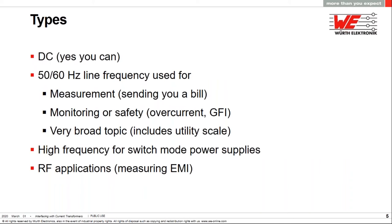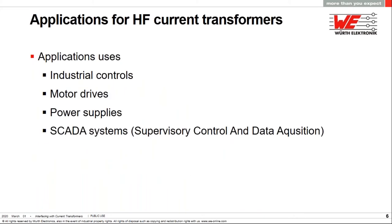Current transformers can be grouped into four broad categories. DC. Yes, you can measure direct current with a current transformer, but it's a little bit more complicated than what we're going to talk about today. 50-60 Hz line frequency current transformers are a very broad topic because they include the utility scale. There they're used extensively for overcurrent and short circuit protection. But on a smaller scale, they're used for measurements, safety monitoring, as I indicated earlier, for billing. High frequency current transformers are used in switching power supplies and motor controls as part of the feedback and control system and overcurrent protection. That's our topic today. And current transformers can be used in RF applications, which would include measuring EMI.